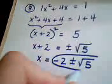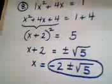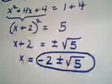So x is equal to negative 2 plus or minus the square root of 5. So there are actually two answers to this equation, negative 2 plus the square root of 5, and negative 2 minus the square root of 5. And we're done. Now let's do the same process again down here.